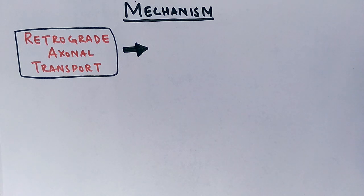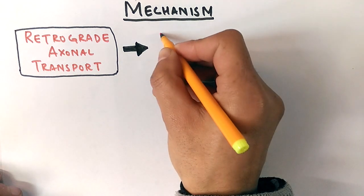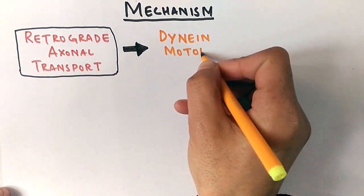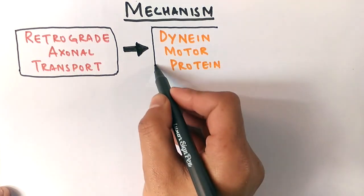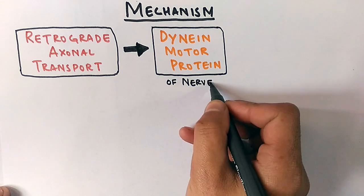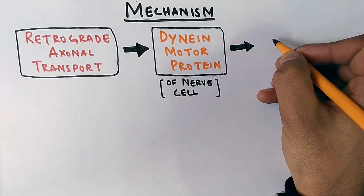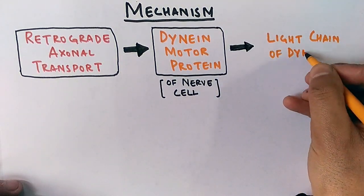This retrograde axonal transport is mediated by dynein motor protein that takes proteins inside the cell or any other cargo. This virus has got P protein and it binds itself to the light chain of dynein motor protein.